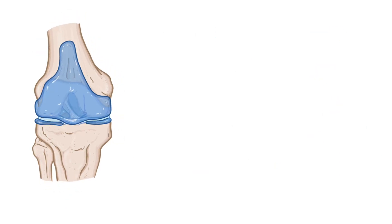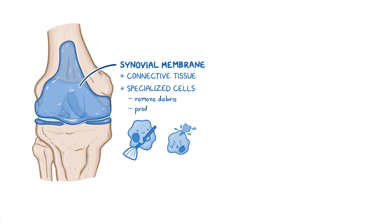Now, zooming in, the bones of healthy synovial joints are connected via a fibrous capsule that is continuous with the periosteum, which is the outer layer of bones. The fibrous capsule has an inner lining called the synovial membrane. This membrane consists of connective tissue and specialized cells that remove debris and produce synovial fluid, which is a viscous fluid found inside the joint capsule to lubricate the joint.